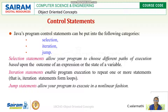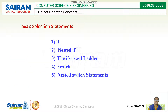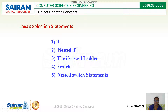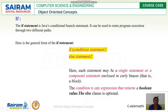Selection statements include: the if statement, nested if, if-else ladder, switch statement, and nested switch statements — five important types. Let us go through these statements one by one.